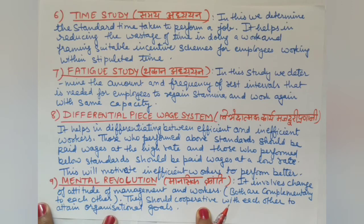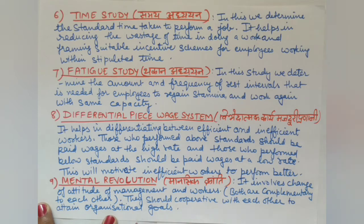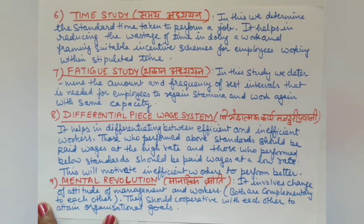The ninth technique is Mental Revolution. Mental revolution involves a fundamental change in the attitude of both management and workers. Both are complementary to each other and should cooperate to attain organizational goals. Currently, management often has a negative feeling toward workers, thinking they don't want to work hard, while workers feel negatively about management, believing they receive too little wages for their work.